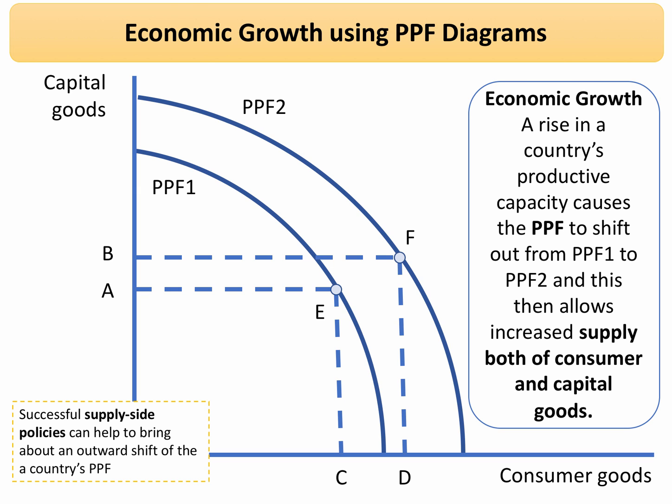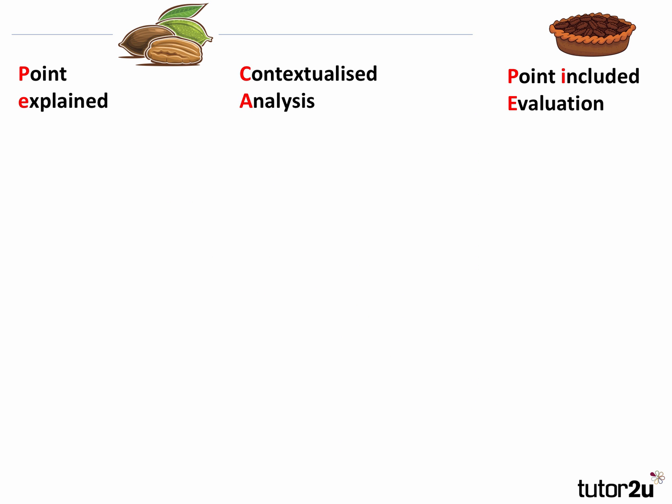We're not going to spend too long on analysis diagrams this time. Instead, I want to build a structure to the answer using something called PEAK and PIE. This time we're going to do four points for this essay — three of which will say that economic growth is particularly important, and one of which will say we have to look at other indicators. We make our point briefly, build contextualized analysis using chains of reasoning, then make an evaluation point before moving on.